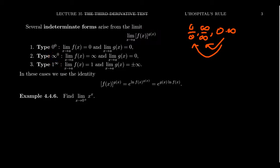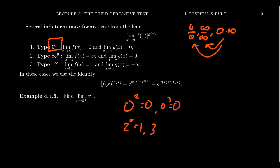Each of these indeterminate forms is indeterminate because there's a conflict of rules. When you look at 0 to the 0, powers of 0 should be 0 — like 0 squared or 0 cubed. But things to the 0 power, like 2 to the 0 or 3 to the 0, should be 1. So there's this clash: who's more powerful, a base of 0 or an exponent of 0? It turns out it's indeterminate because anything could happen.